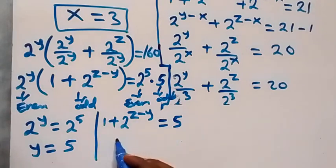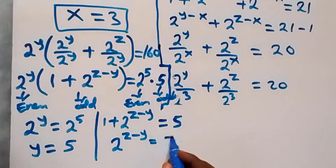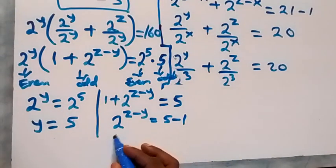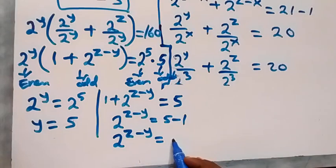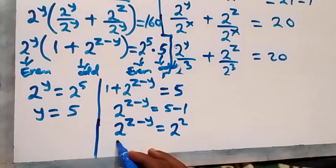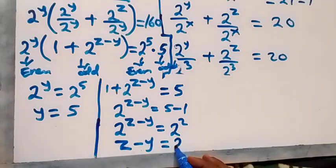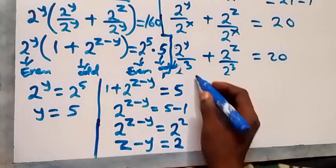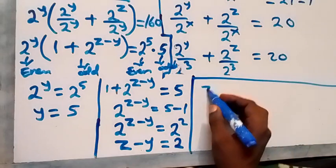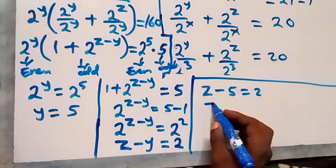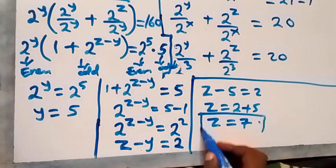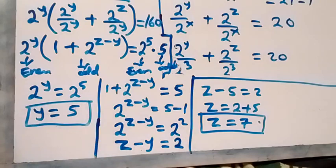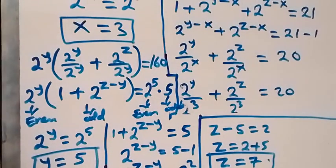From 1 plus 2 raised to power (z minus y) equals 5, taking 1 to the other side gives 2 raised to power (z minus y) equals 4, which is 2 raised to power 2. Equating the powers, z minus y equals 2. Since y equals 5, we have z minus 5 equals 2, so z equals 7.